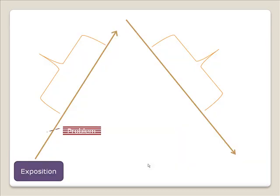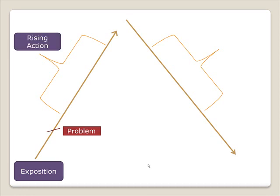Next on the Freytag Pyramid, we have the presentation of a problem. Some problem occurs which creates an unstable situation. This is the conflict or the dramatic situation that develops in order for the story to play out. Next, we have the rising action, which is the sequence of causally related events that lead up to the climax.